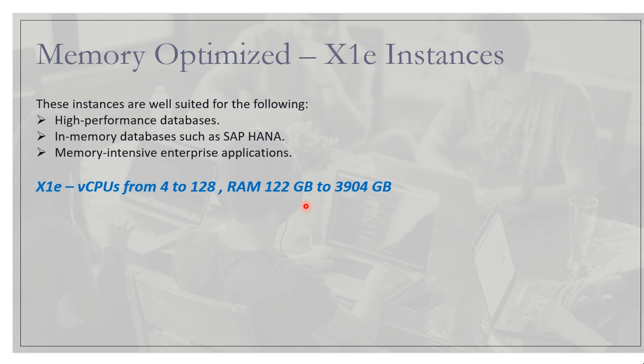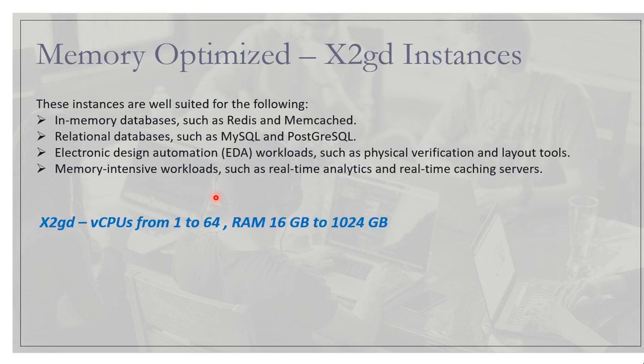The X1e instances are suited for high performance databases, SAP, and memory-intensive enterprise applications. Compared to X1, virtual CPUs range from 4 to 128, while RAM ranges from 122 GB to 3904 GB. The X2gd instances have virtual CPUs from 1 to 64 and RAM from 16 GB to 1024 GB.